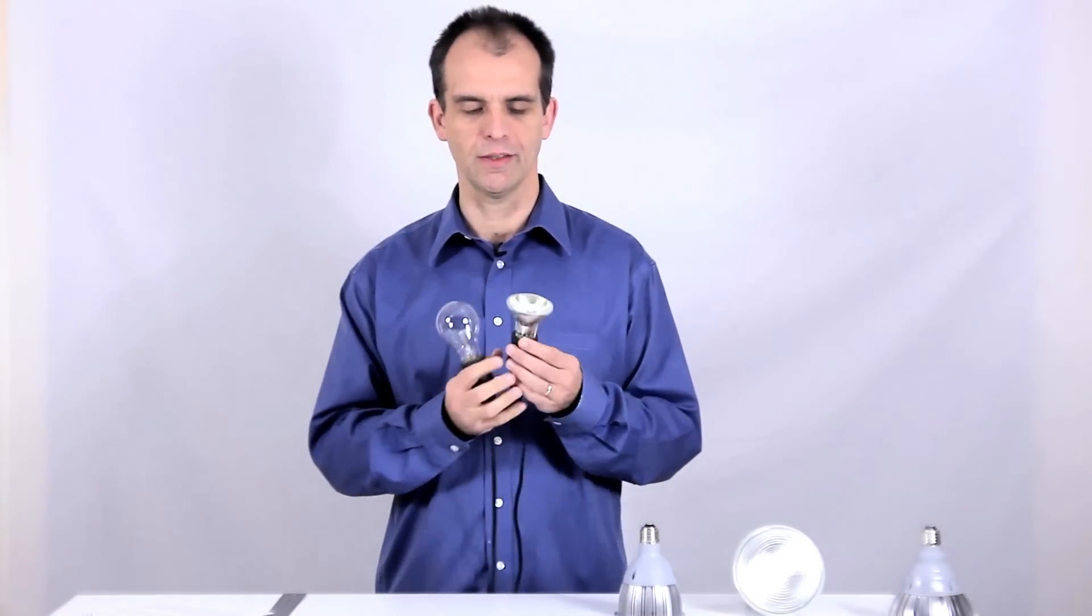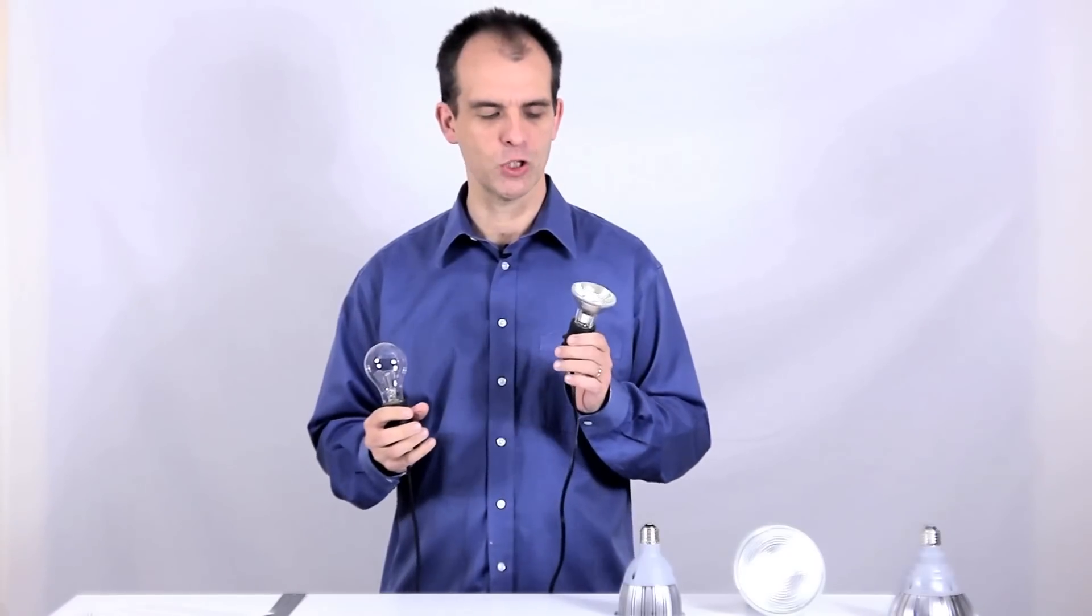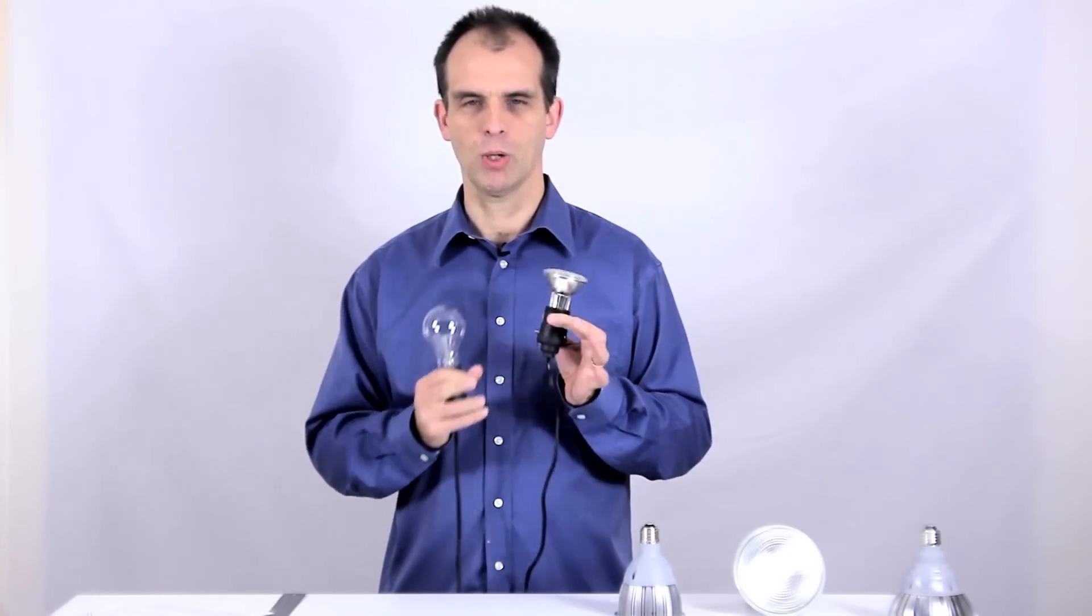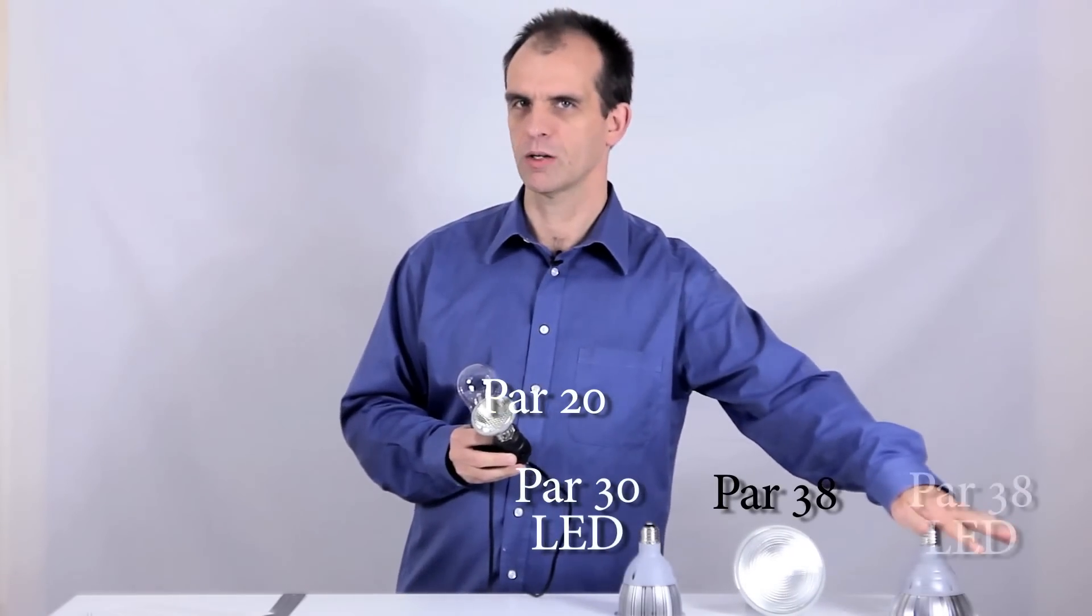We also have light bulbs that look like this, and this is a halogen light. These are not LEDs yet. This one's an LED, but basically they're interchangeable. So this guy is a PAR-20. We have a PAR-38, an LED PAR-30, an LED PAR-38.